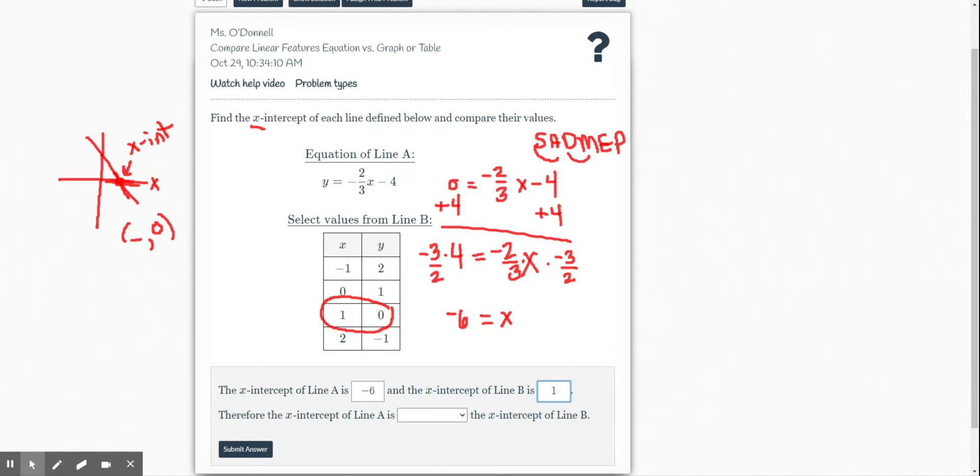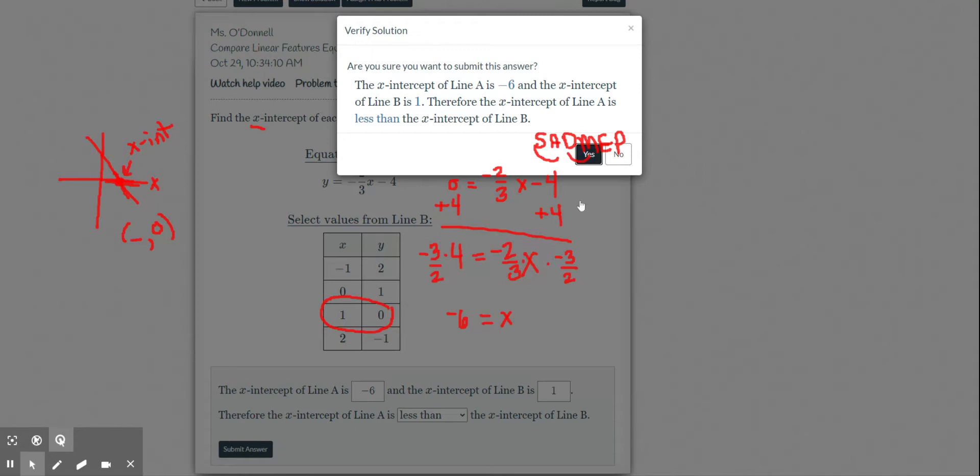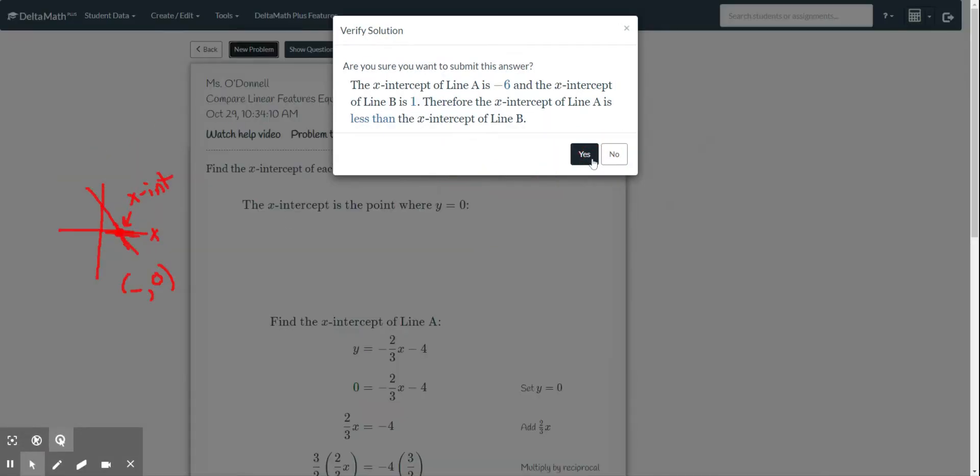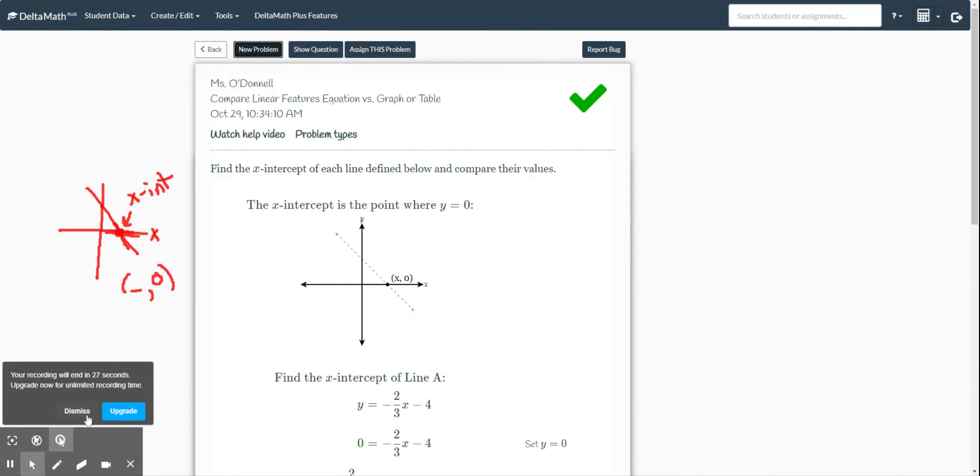Therefore, the x-intercept of line A is going to be less than, because negative 6 is less than 1. And if you're not sure about that, you know, write out your inequalities. Remember the alligator mouth always eats the bigger number. Go ahead and submit. Oh, yes. And it liked it.